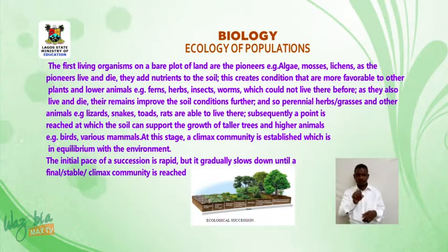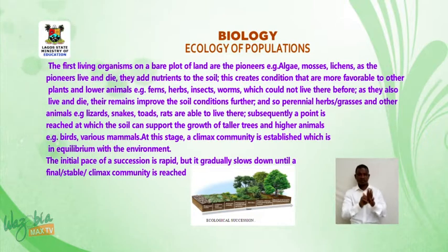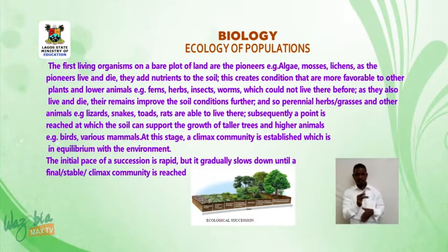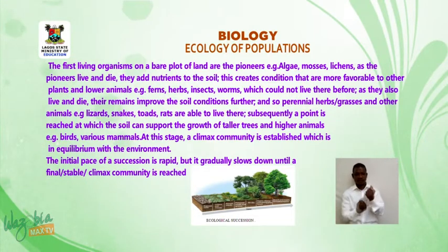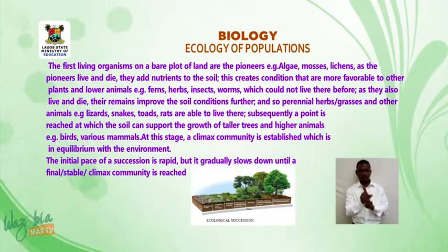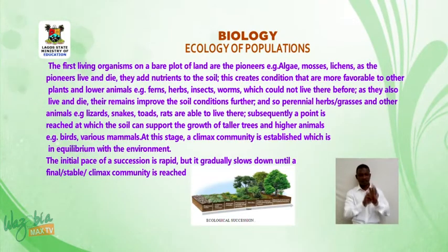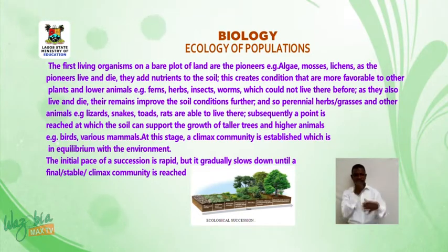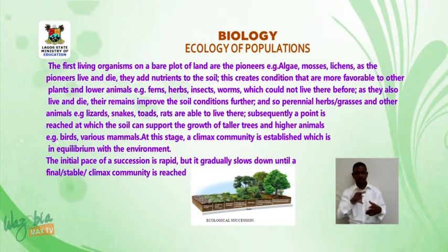As these organisms also live and die, their remains improve the soil conditions further, and so perennial herbs or grasses and other animals — for example, lizards, snakes, toads, and rats — are able to live there. Subsequently, a point is reached at which the soil can support the growth of taller trees and higher animals, for example birds and various mammals.